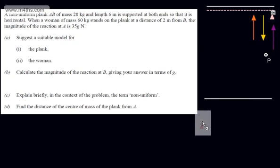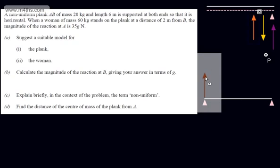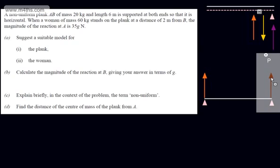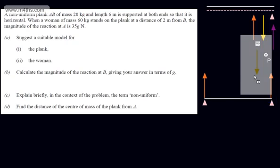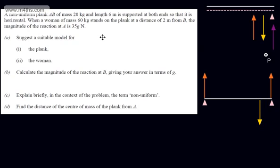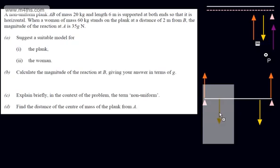Let's put some supports on — one just here and one just here. This is purely to give you a visual representation of what's happening. We have a normal reaction at A, and we're given that value: 35g Newtons. We've got a normal reaction at B, which we need to find. We've got the woman standing 2m from B with a weight of 60g Newtons. Weight is mass times gravity. And also we're going to have the weight of the plank, and we don't know where that's going to be, so I'm just going to put it somewhere along here.